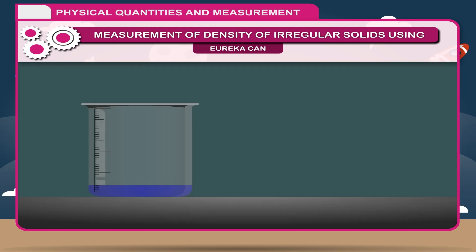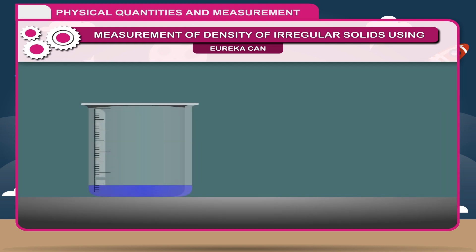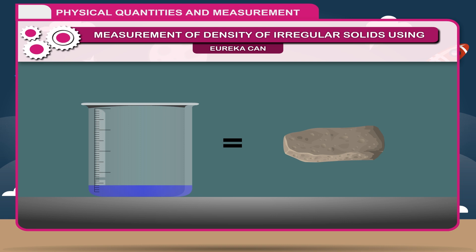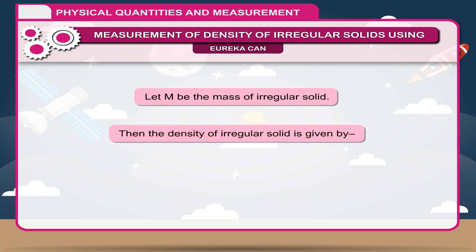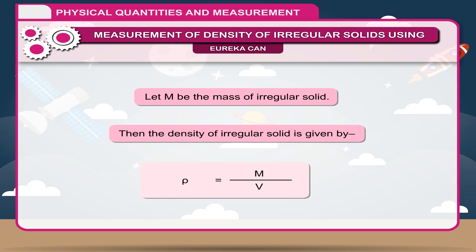The volume of the overflow water collected in the cylinder is equal to the volume of the irregular shaped solid. Let it be V. Let M be the mass of the irregular solid. Then, the density of the irregular solid is given by M divided by V.